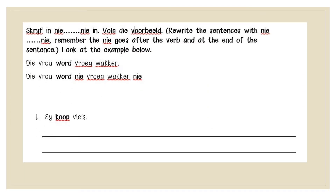Let's look at page 31. Remember last time we did changing a sentence to the negative form, where we added 'nie' after the verb in the sentence and 'nie' at the end of the sentence. So the workpack says: rewrite the sentence in the negative form using 'nie' and 'nie'.